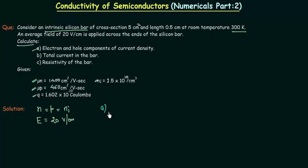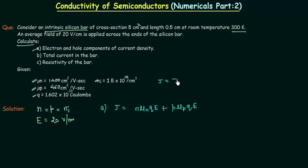The first thing to find is the electron and hole components of current density. Current density J is given as n·mu_n·q·E plus p·mu_p·q·E. You can also remember this from Ohm's law: J equals sigma·E, where conductivity sigma equals (n·mu_n + p·mu_p)·q. From the conductivity formula, you can easily derive the current density formula.